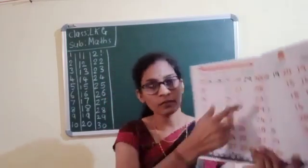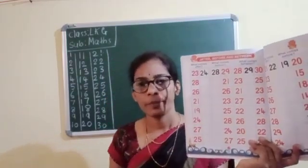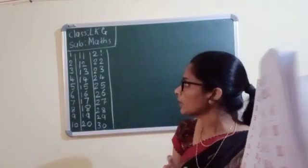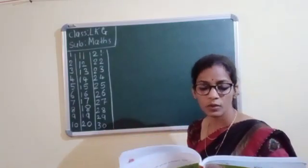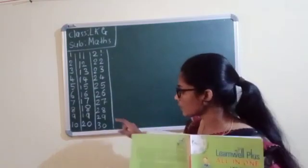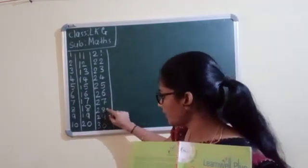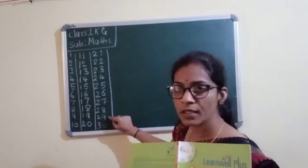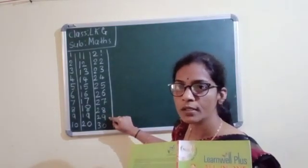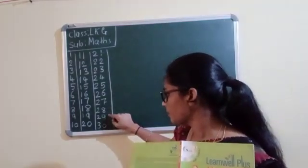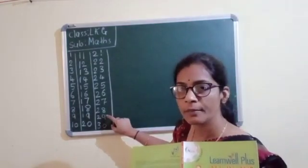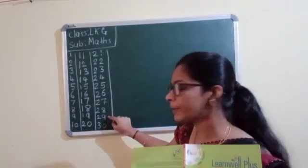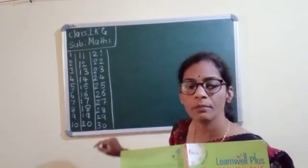And now let's learn the between number. Between number — I will give an example: 28 and 30. Where is 28? 28 and 30 — what is the number in between? 29. This is the between number. 28 and 30, between is 29.